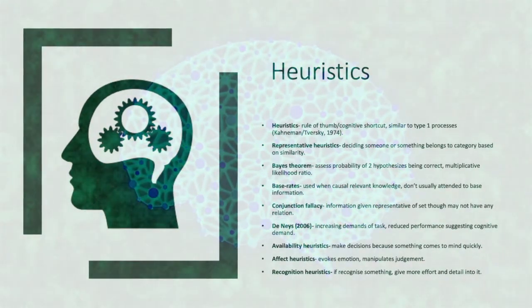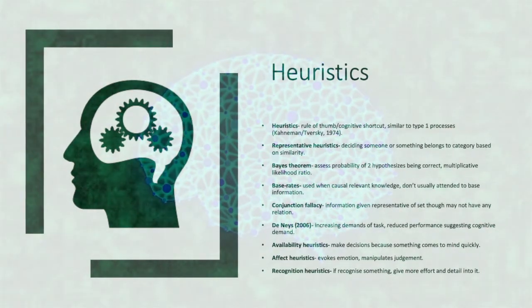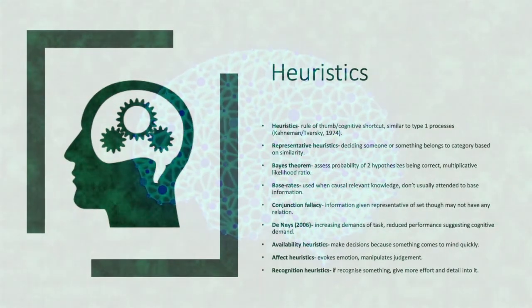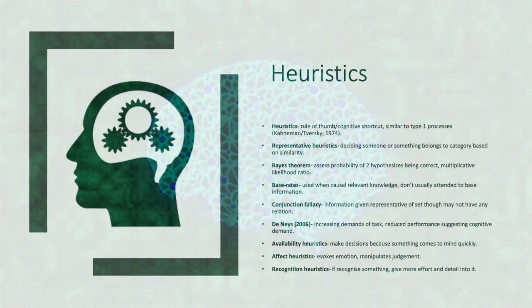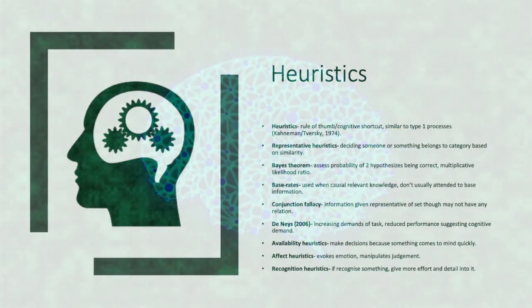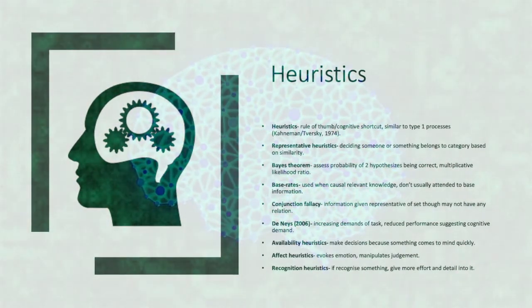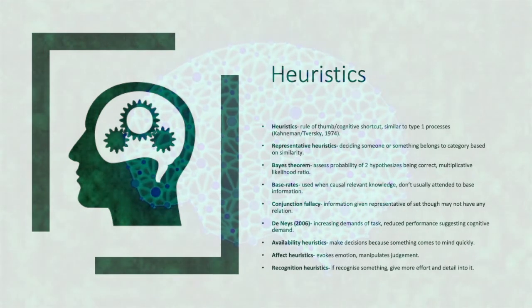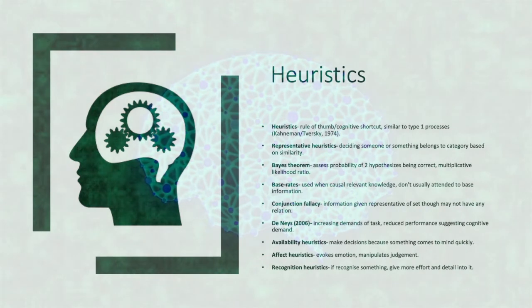Availability heuristics is when individuals make decisions because something comes quickly to mind. Affect heuristics evokes emotion and may manipulate an individual's judgment. Recognition heuristics is when individuals recognize something and give more effort and detail into that thing they recognize as opposed to something they don't recognize.